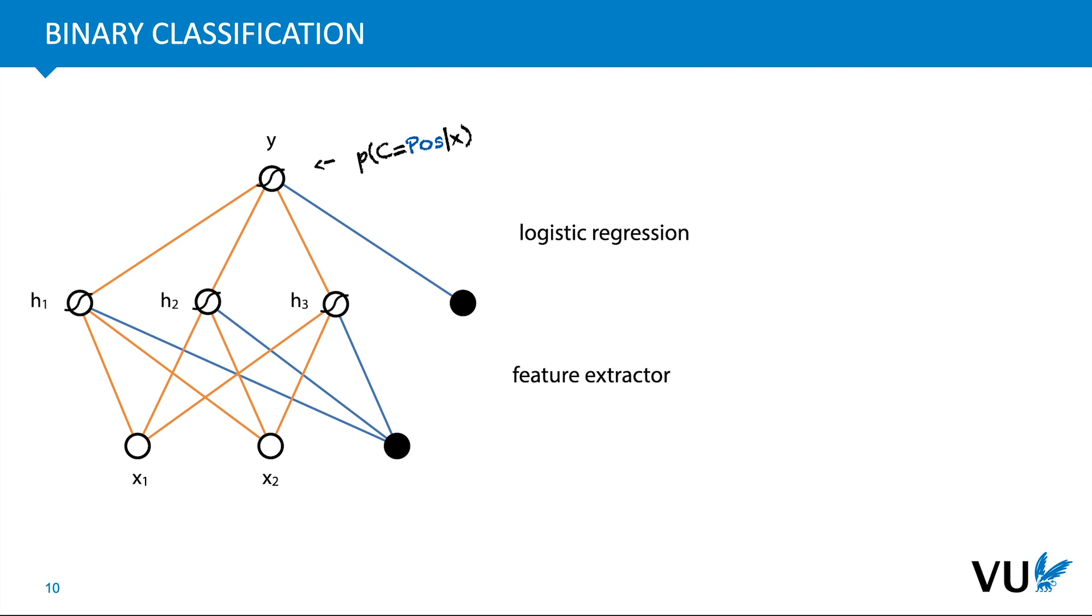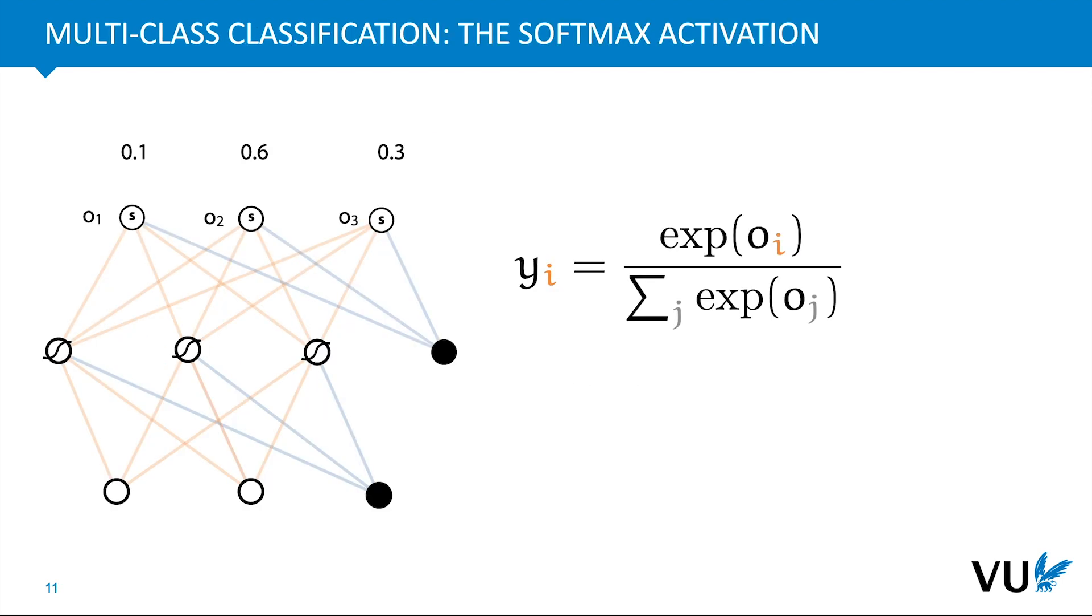If we have multi-class classification, we can introduce a softmax non-linearity on the output layer. That's a bit special because this activation doesn't just look at the value of one node, but also at the values of other nodes in the same layer. You take the output values of the nodes, exponentiate them, and then normalize over all nodes in the output layer. This gives you outputs that you can interpret as probabilities. The three output nodes sum to one. That's how you do multi-class classification in a neural network.